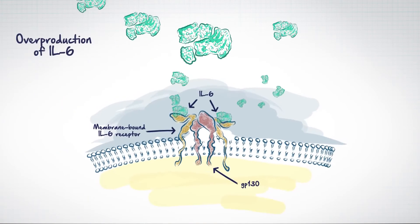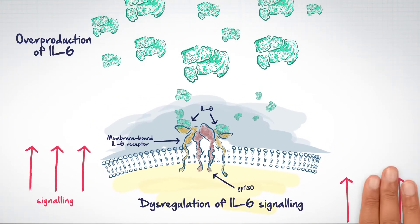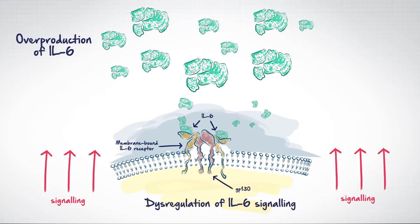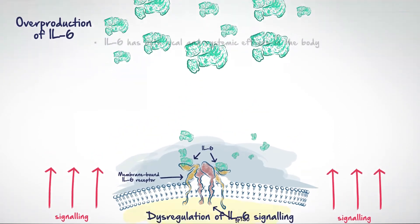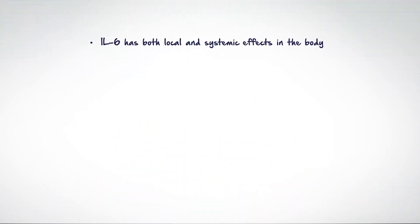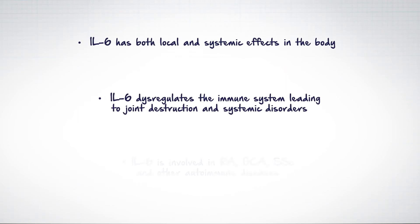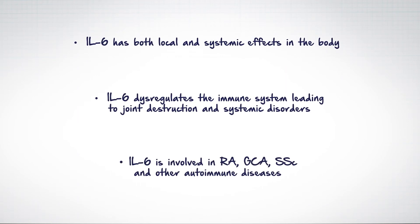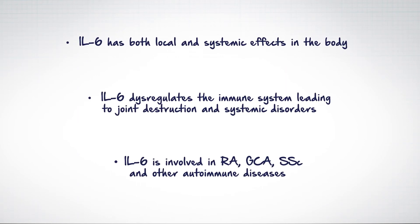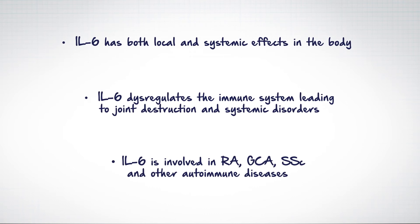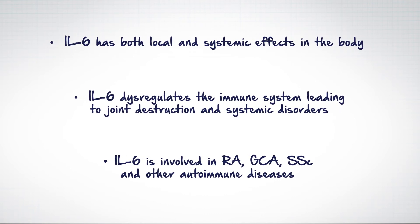The overproduction of IL-6 and dysregulation of IL-6 signaling have been demonstrated to have a range of local and systemic effects in the body. These lead to joint destruction and systemic disorders in patients with RA, as well as profoundly influencing the nature of a range of other autoimmune diseases.